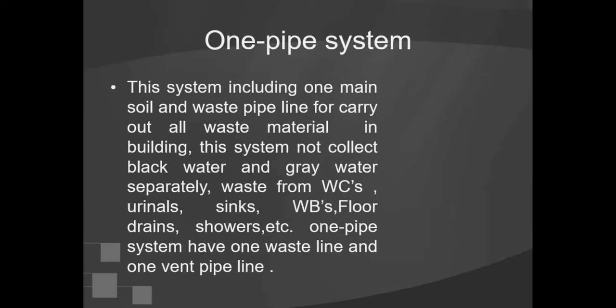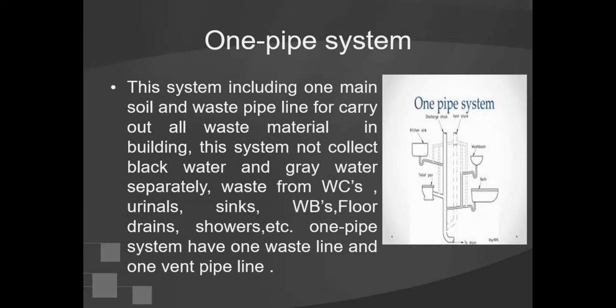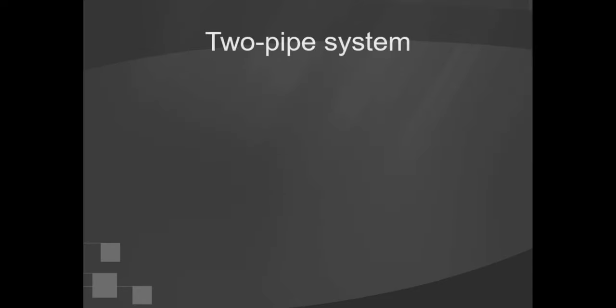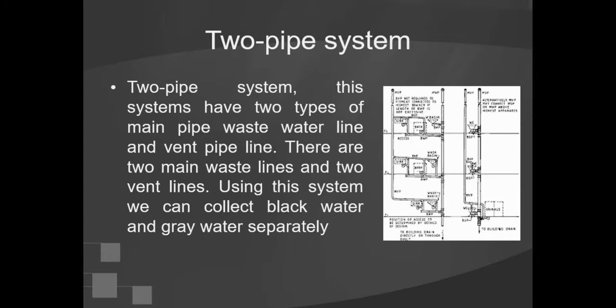The one pipe system includes one main soil and waste pipeline to carry out all waste material in the building. This system does not collect black water and grey water separately — waste from WCs, urinals, sinks, wash basins, floor drains, showers, etc. all goes together. It has one waste line and one vent pipe line. The two pipe system has two types of main pipes: waste water line and vent pipe line, with two main waste lines and two vent lines, allowing black water and grey water to be collected separately.